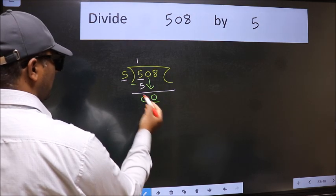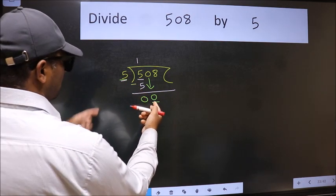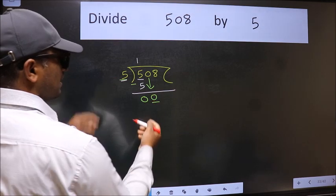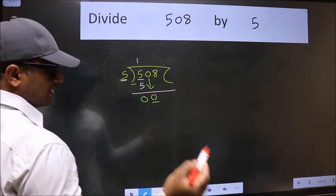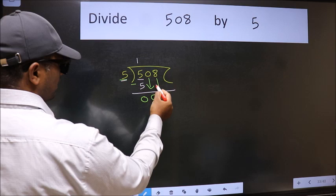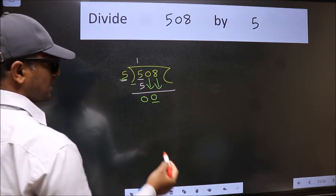Now here we have 0 and here 5. 0 is smaller than 5, so we should bring down the second number.